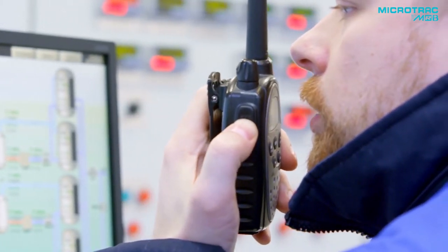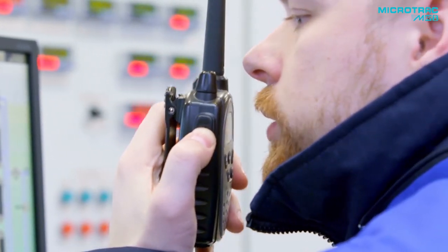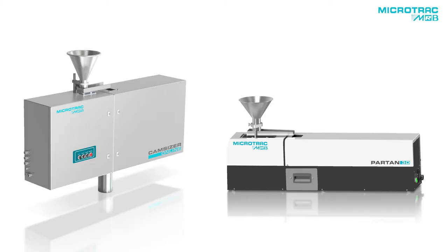When product in the plant starts to go out of specification, the control room gets an alert immediately so they can take action before off-spec product is produced. Microtrack's Partan 3D Pro is delivering significant financial results to plants around the world.